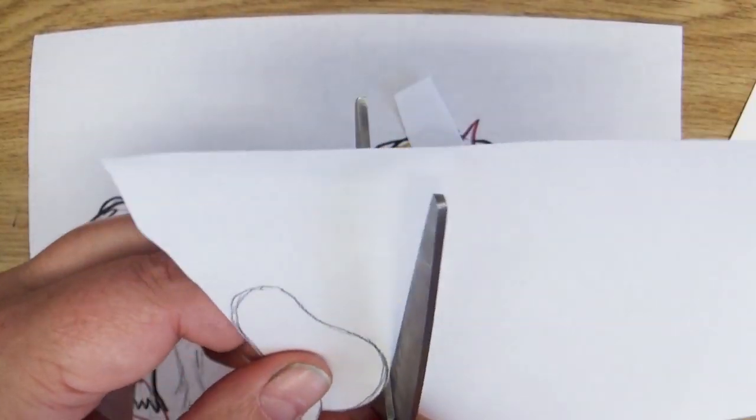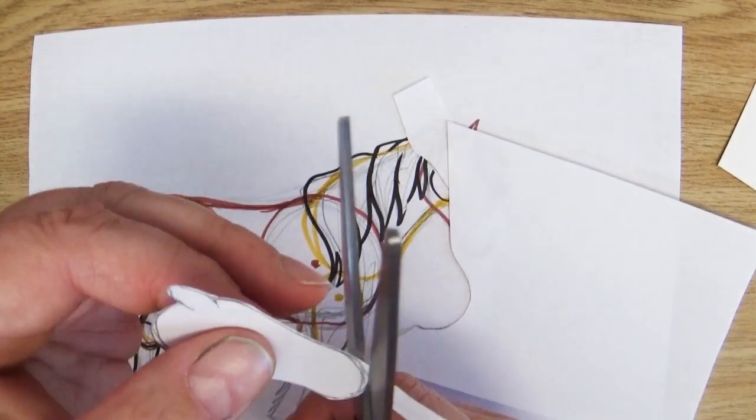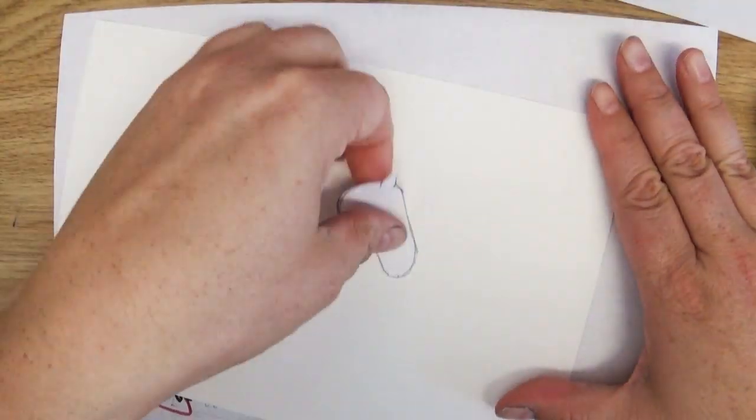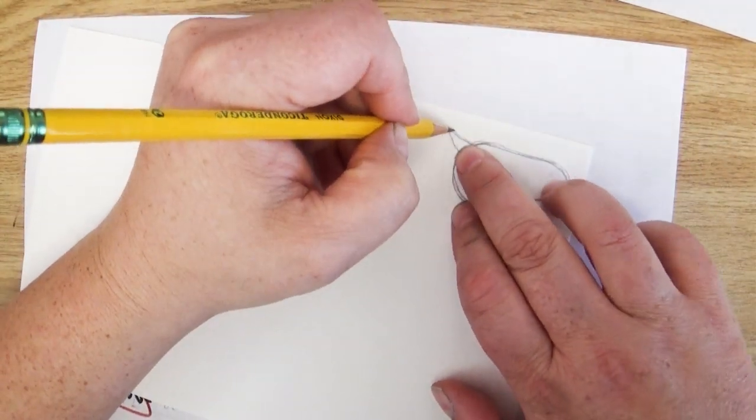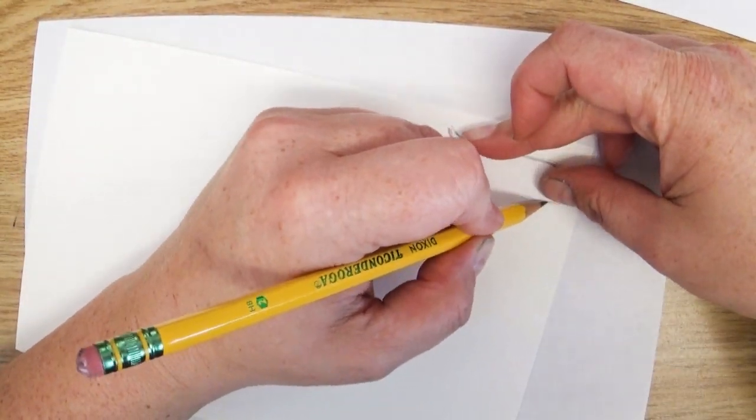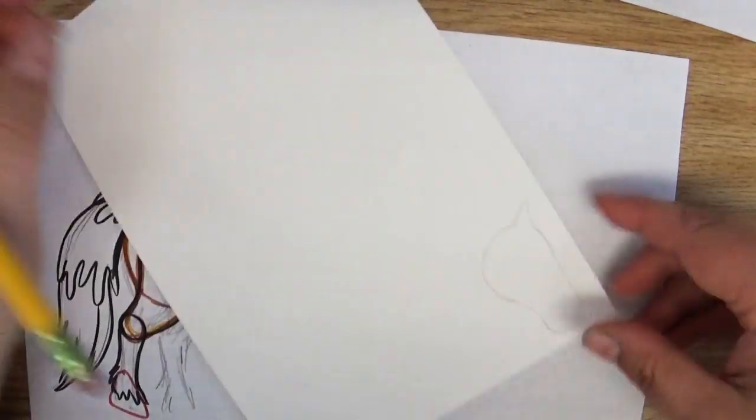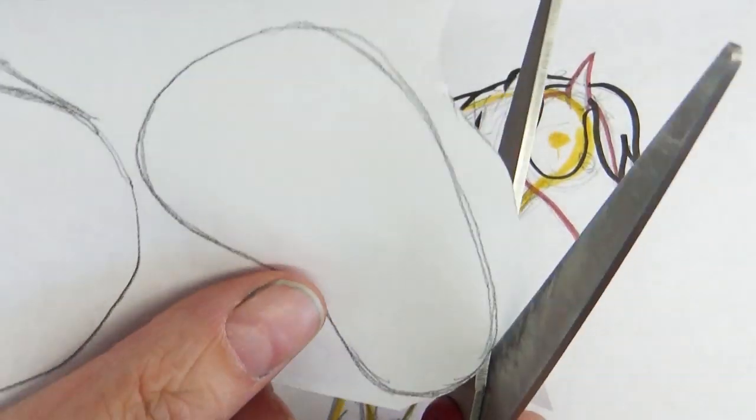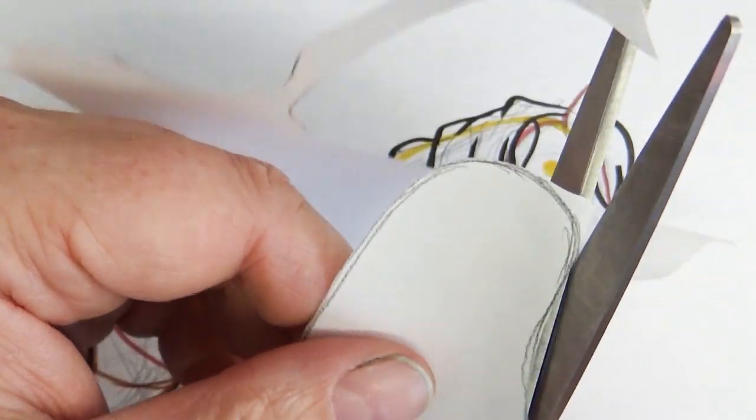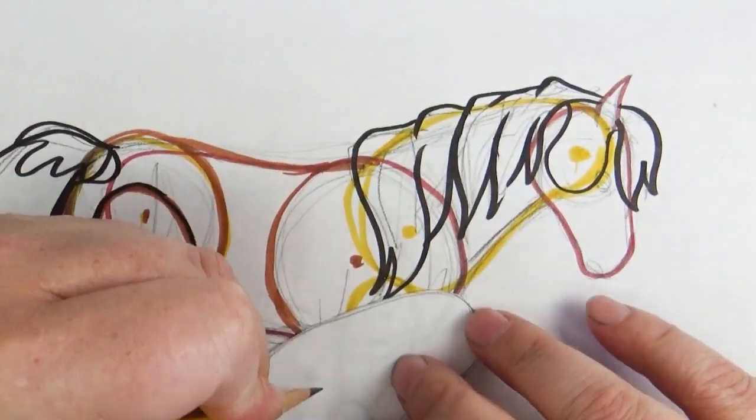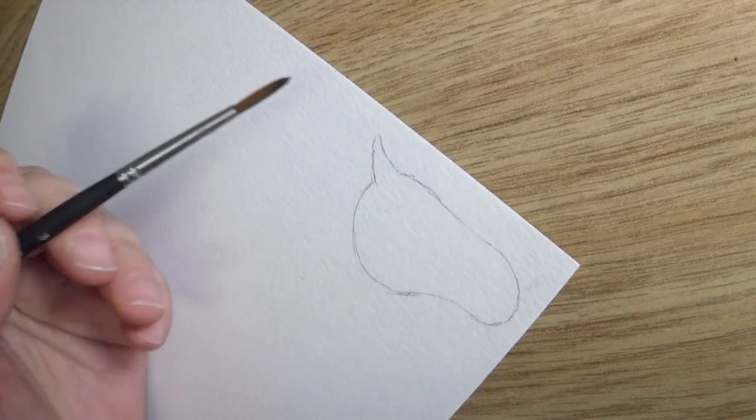Once the pattern pieces are all cut out, I traced them onto the paper of choice. For this one I knew I was going to add a lot of color and work to it, so I went ahead and used a really nice watercolor paper that I had. You want something that's stiff and sturdy enough that's gonna withstand being moved around and everything, so a nice cardstock or mixed media paper, watercolor paper works really really well.